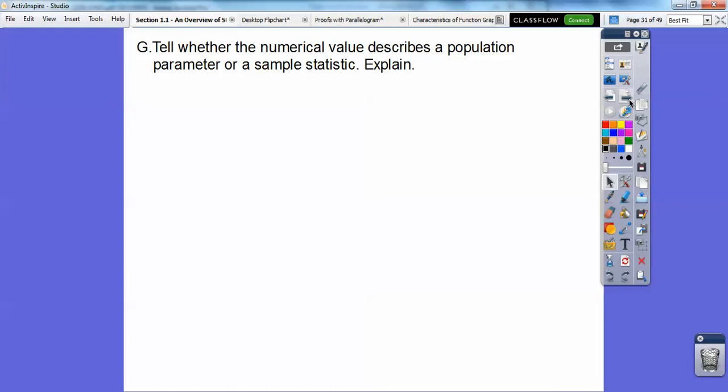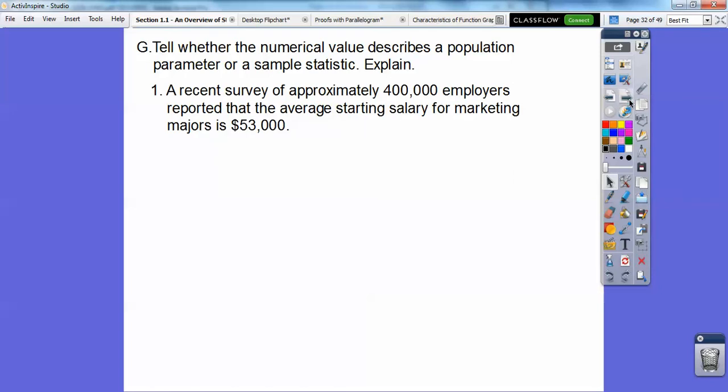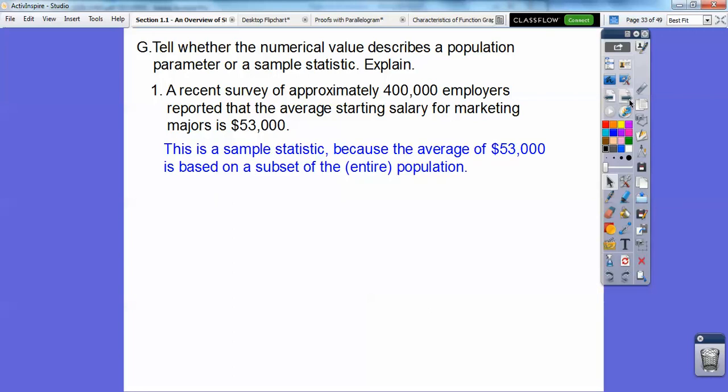Tell whether the numerical value describes a population parameter or a sample statistic and explain. Remember, population parameter is the whole population. A recent survey of approximately 400,000 employers reported that the average starting salary for marketing majors is $53,000. Since it's a recent survey, this is a sample statistic because the average of the $53,000 is based on the subset of the entire population.